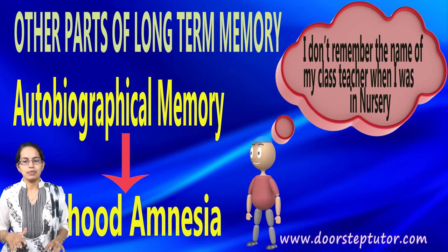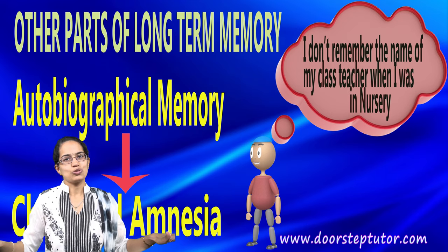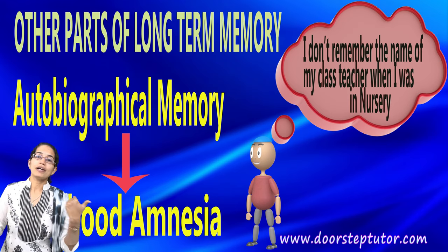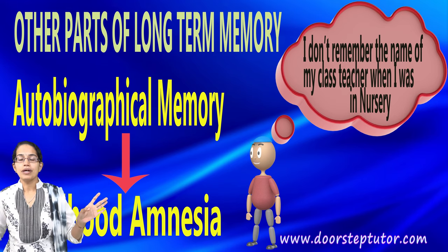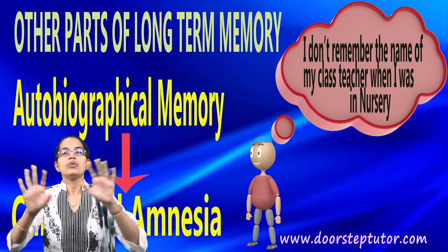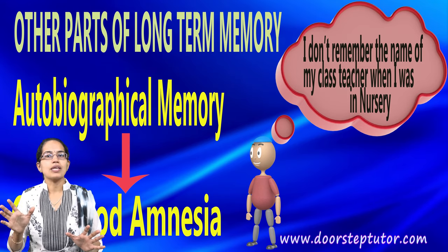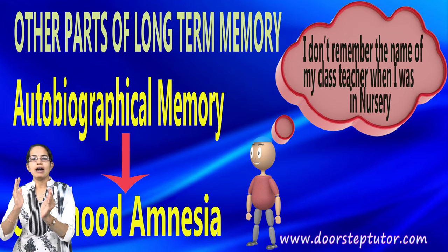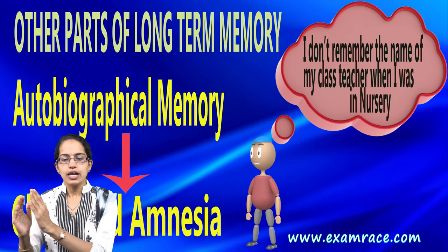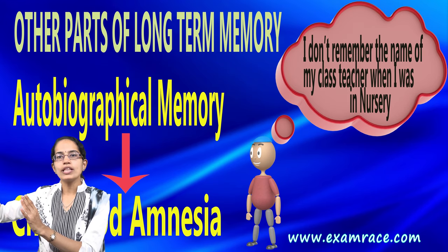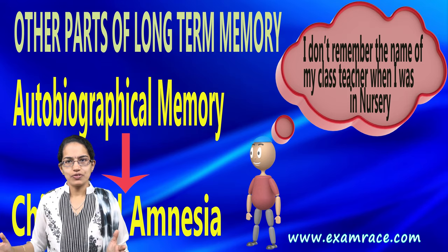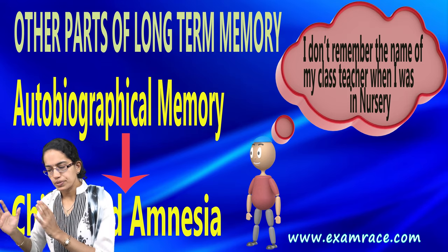The next is autobiographical memory. Autobiographical memories are personal memories, and they are not evenly distributed through childhood. For example, what happened before the age of 4 to 5 years, most of us don't remember — that is childhood amnesia. There is a teen or youth period where you remember most things, and then in old age, only recent happenings are remembered. That is autobiographical memory, based on personal memories.